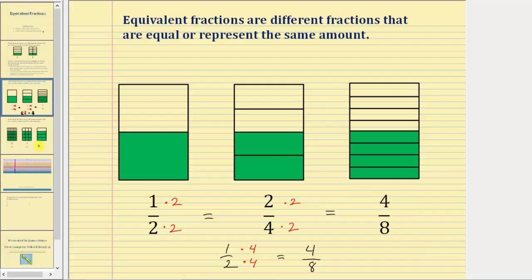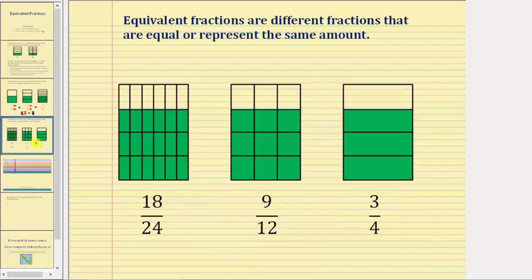Let's look at another example. Here we have a model for the fraction eighteen twenty-fourths, a model for nine-twelfths, and a model for three-fourths. Notice how in each fraction the same amount is shaded, but we're using different sized pieces.